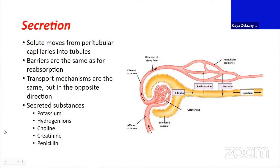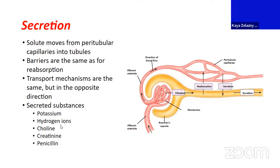Substances secreted by our kidneys are later adjustments to the filtrate. These can include potassium, hydrogen ions—especially as we try to balance pH, since hydrogen ions are part of how pH is defined—and we'll be able to balance pH by secreting hydrogen ions. We also secrete things like choline, creatinine, and penicillin, so drugs may be secreted here as well.